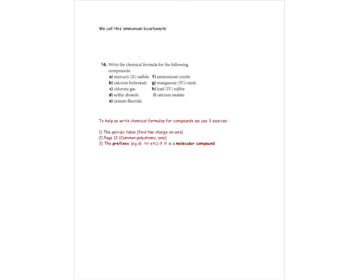The next question says: write the chemical formula for the following compounds. We need to change the chemical name into a chemical formula. There are three steps using three different sources. Number one: use the periodic table to find the charge on ions. Number two: use the polyatomic ion chart on page 12. Number three: if the name contains a prefix, it's a molecular compound — otherwise, use steps one and two for ionic compounds.